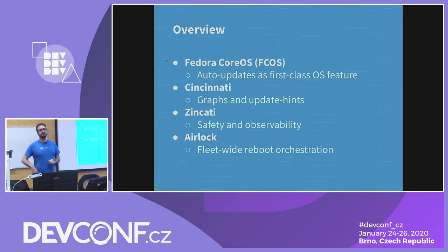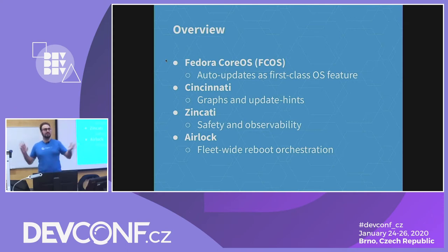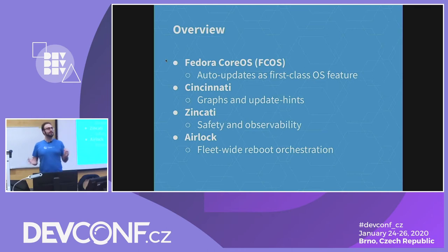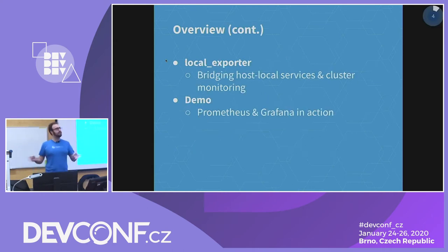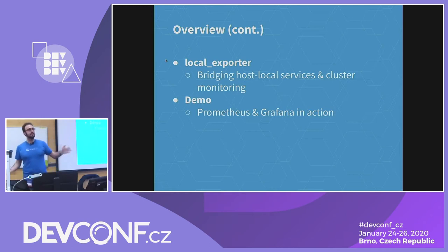Today we're going to cover a lot of stuff. I don't pretend to explain every single detail, but will give an overview and zoom into specific fields. First, for those who don't know Fedora CoreOS, an overview especially on the auto-updating side. Then we'll cover components of the auto-updating stack: the server side, the protocol Cincinnati, the client side Zincati, and helpers like Airlock and a local exporter. Finally, there's a demo — I'm cheating a bit because it's pre-recorded and already on YouTube, so we'll just watch through it.